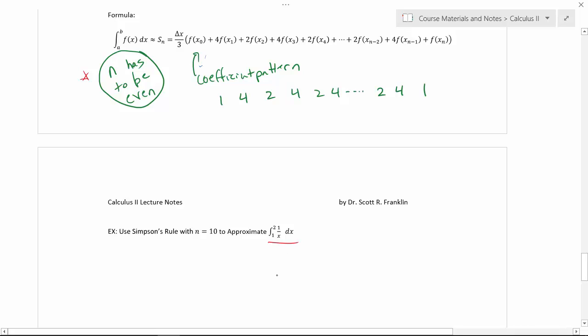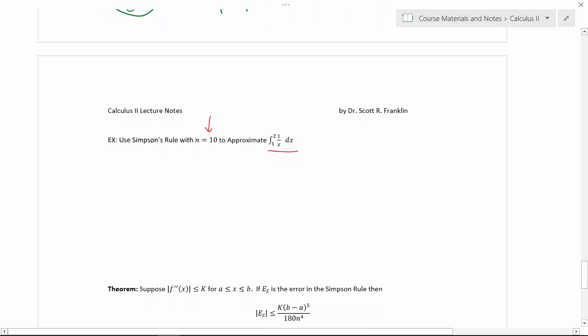So we're going to use the same integral that we were talking about before in class. Now I have to choose my n to be something other than the 5 that I used. I'm going to use n equals 10. So I need a new delta x. Remember delta x is b minus a over n, which in our case is 2 minus 1 over 10, so that's 1 tenth or 0.1.